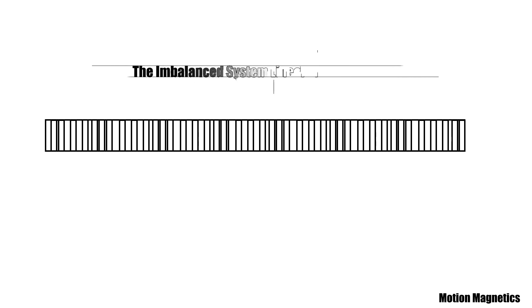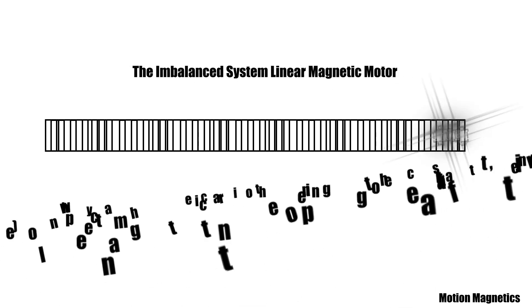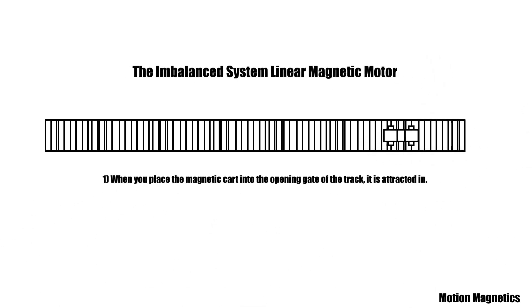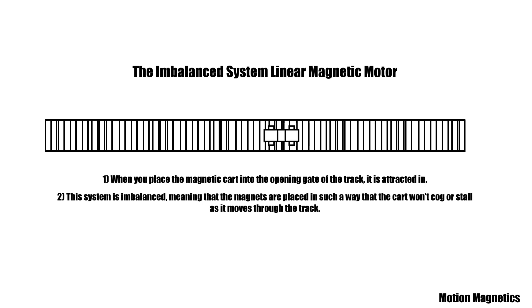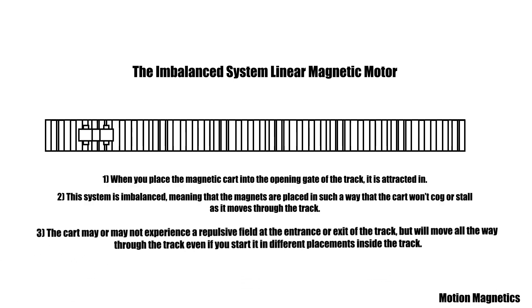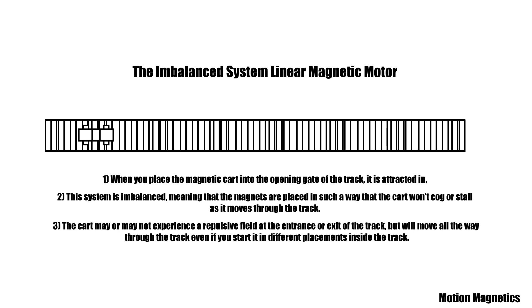The imbalanced system linear magnetic motor. Number one: when you place the magnetic cart into the opening gate of the track it is attracted in. Number two: the system is imbalanced, meaning that the magnets are placed in such a way that the cart won't cog or stall as it moves through the track. Number three: the cart may or may not experience a repulsive field at the entrance or exit of the track, but will move all the way through even if you start it in different placements inside the track.